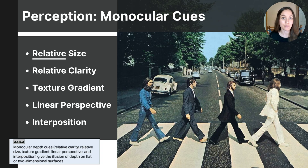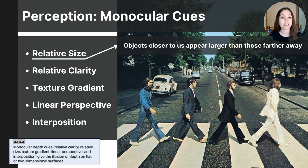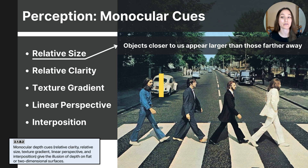The first monocular cue is relative size. This cue helps us perceive depth by showing that objects closer to us appear larger, even if they are the same actual size as objects farther away. In the Abbey Road photograph, notice that the cars lining the street are all the same size in reality, but the cars closer to us appear larger than those farther away. This provides a sense of depth called relative size.